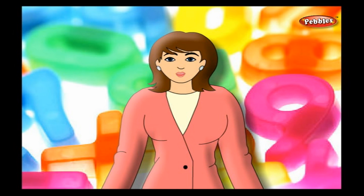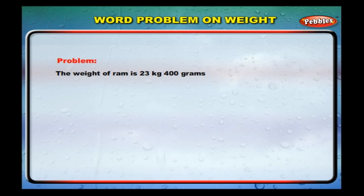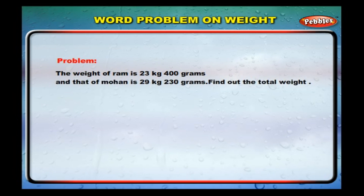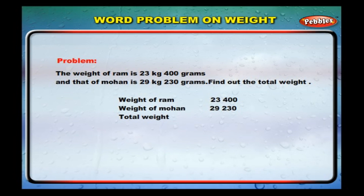Let us do a word problem on weight. The weight of Ram is 23 kilograms 400 grams and that of Mohan is 29 kilograms 230 grams. Find the total weight. Weight of Ram: 23 kg 400 g. Weight of Mohan: 29 kg 230 g. The total weight is equal to 52 kilograms and 630 grams.